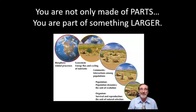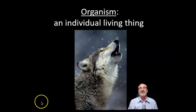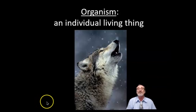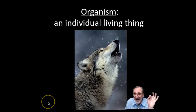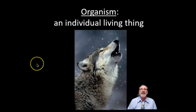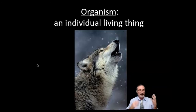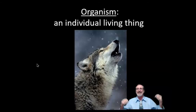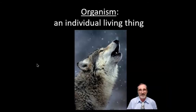An organism is an individual living thing. For example, a wolf is an organism. You are an organism. My pet dog is an organism. An elm tree, a blade of grass, an ant, an amoeba — all organisms. It refers to the individual living being.